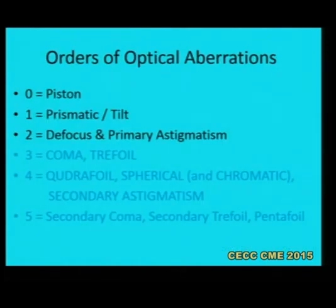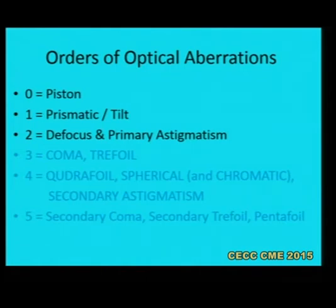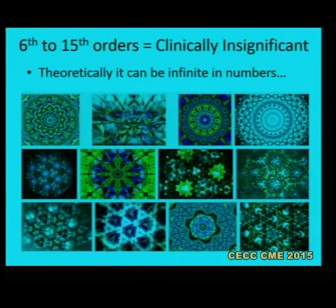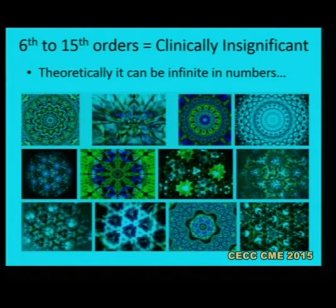The orders of optical aberrations are as follows: zero order is piston aberration; first order is prismatic or tilt; second order is defocus or primary astigmatism; third order is coma and trefoil; fourth order is quadrifoil, spherical aberration, chromatic aberration, and secondary astigmatism; fifth order is secondary coma, secondary trefoil, and pentafoil. Sixth to fifteenth order aberrations are clinically insignificant, and theoretically the number can be infinite — like a kaleidoscopic image.